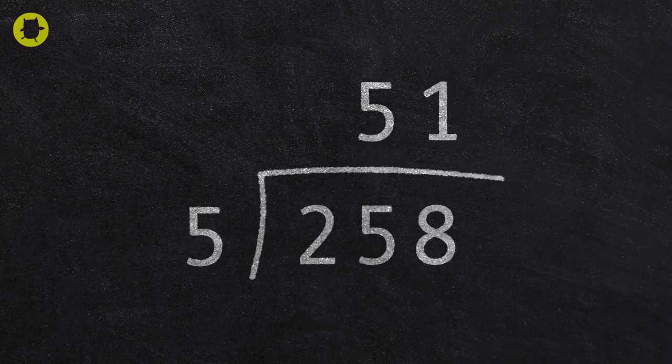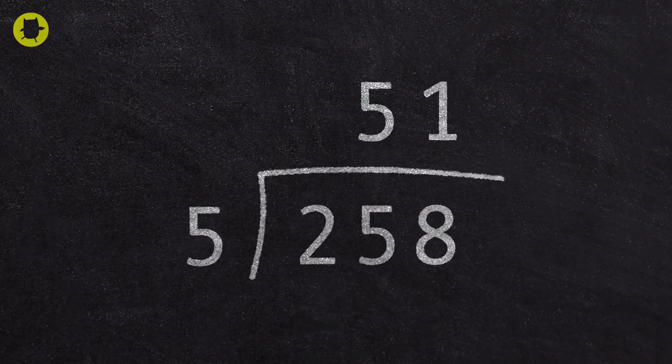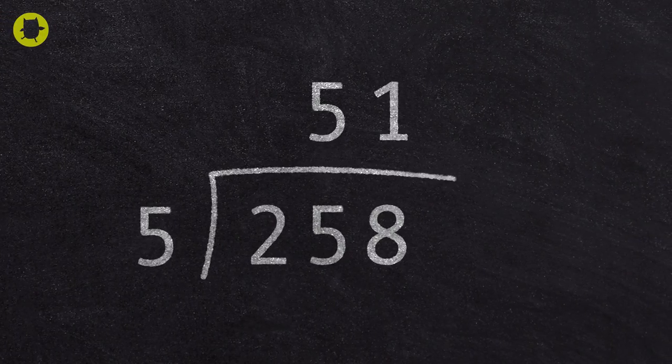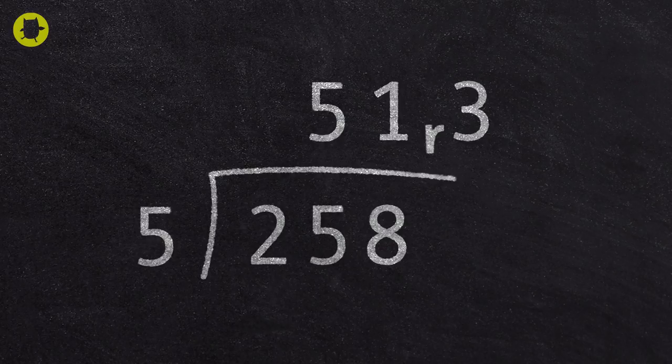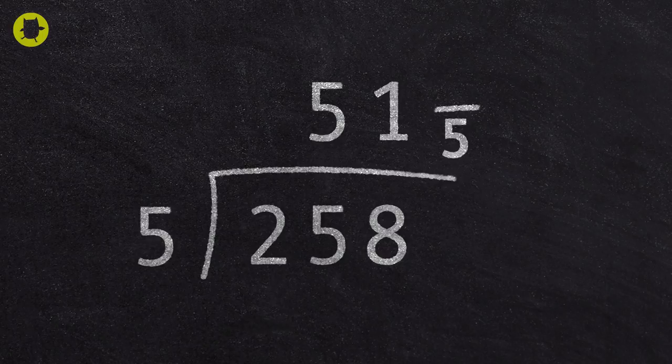If there is one group of 5 in 8, there will be 3 remaining. So the answer to 258 divided by 5 is 51 with a remainder of 3. We can write this as 51 remainder 3. We can also express this as a fraction, which would be 51 and 3/5. This is because we take the divisor 5 as the denominator and the remainder 3 as the numerator.